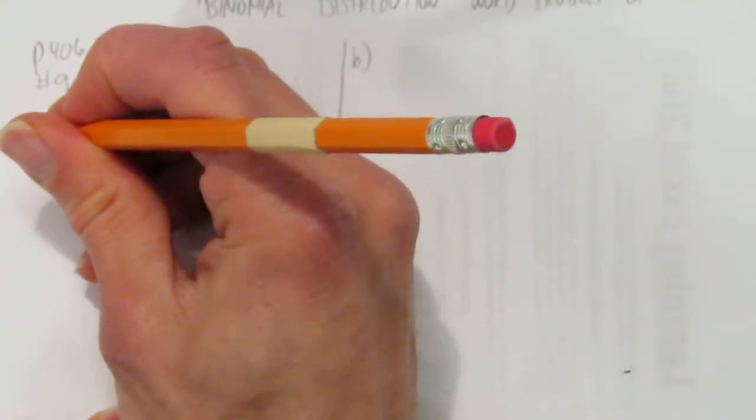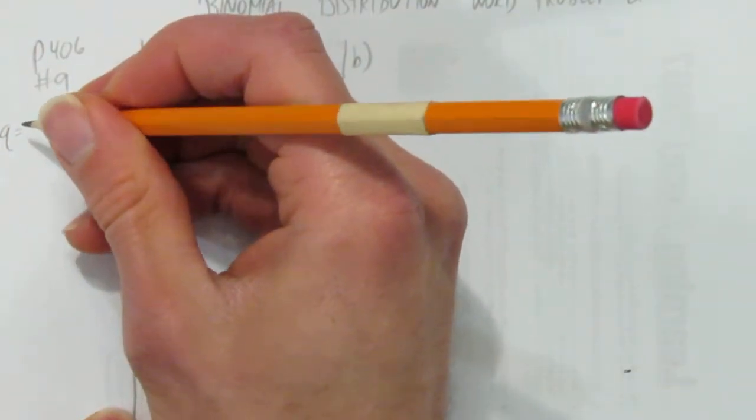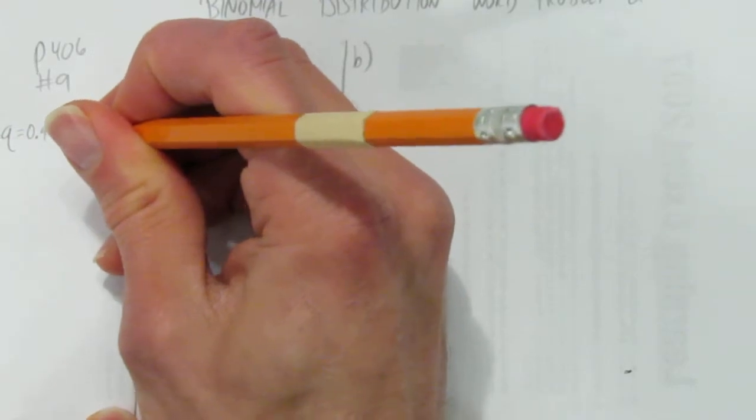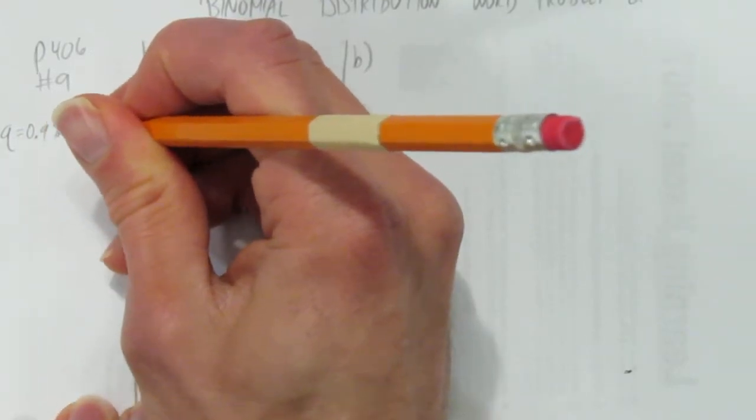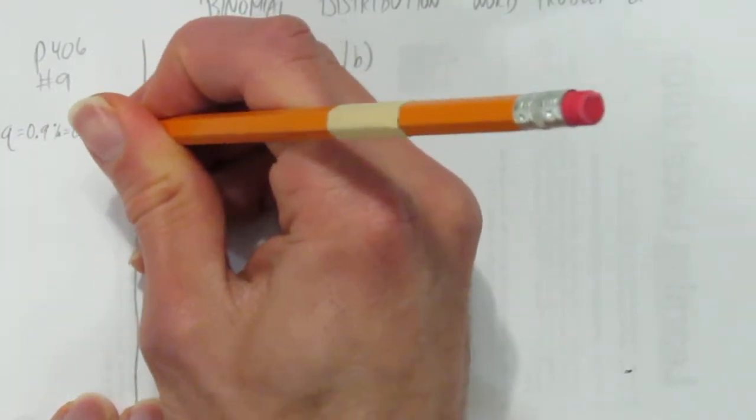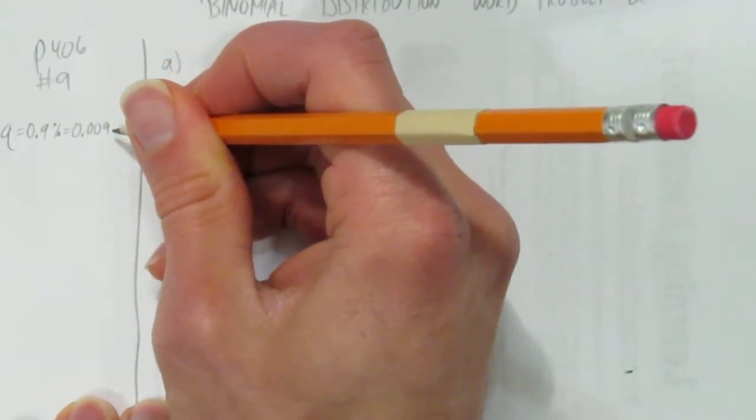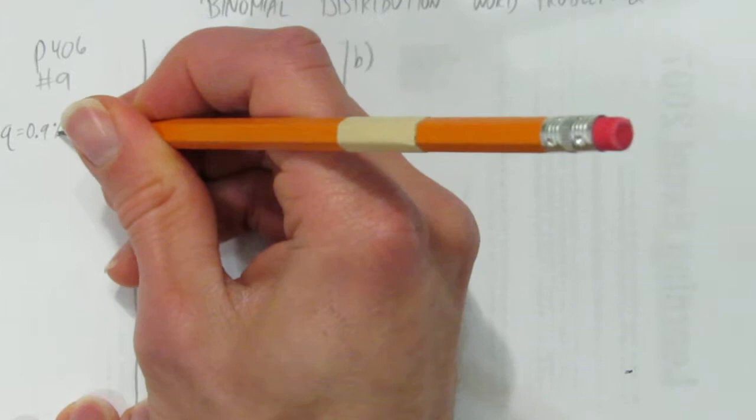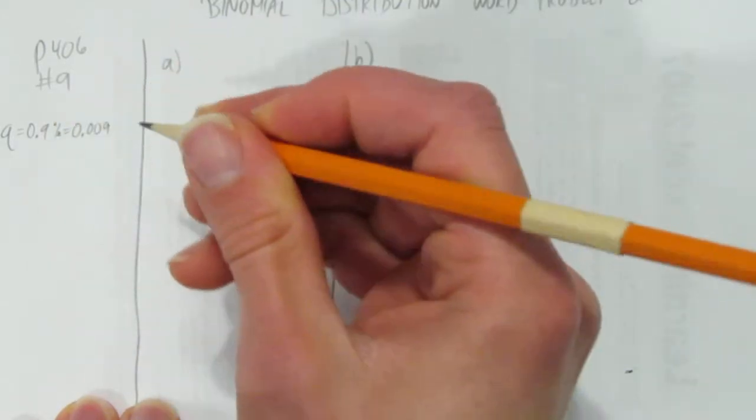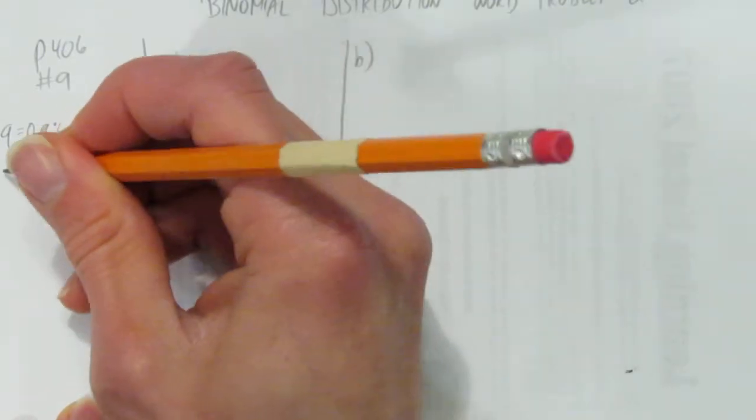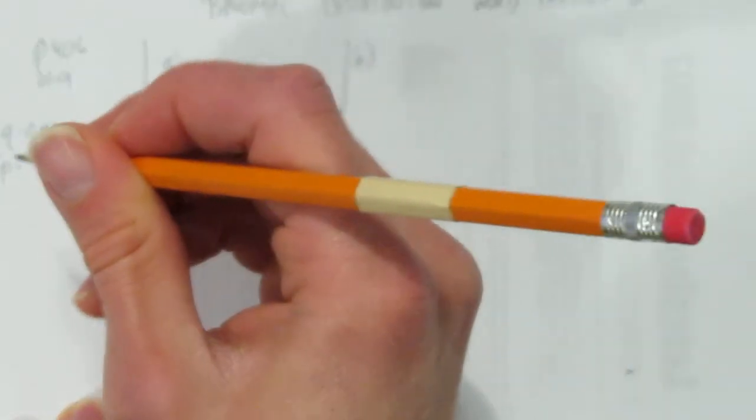The most common problem here is people write the wrong Q value. It's a 0.9% failure rate, but that's a percentage. To make it a decimal it would be 0.009. You move the decimal over two spots to make it from a percentage to a decimal. So the Q is not 0.9, it's 0.009. Make sure you got the right Q - that's the real trick of this question I think.